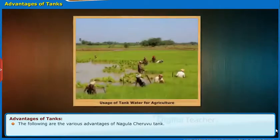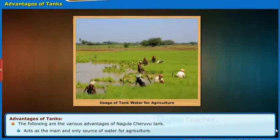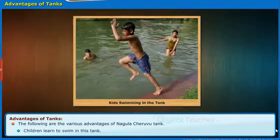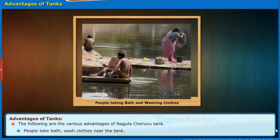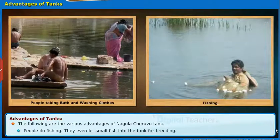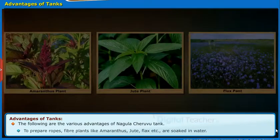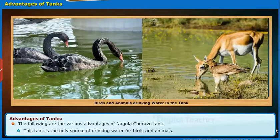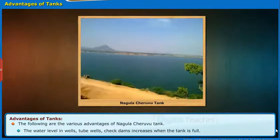Here we will know about the various advantages of Nagula Chiruvu tank. It acts as the main and only source of water for agriculture. Farmers and agricultural laborers mostly depend on this tank to carry out their agricultural activities. Children learn to swim in this tank. People take bath and wash clothes near the tank. People do fishing and even let small fish into the tank for breeding. Fiber plants like amaranthus, jute, flax, etc. are soaked in water. This tank is the only source of drinking water for birds and animals. The water level in wells, tube wells, and check dams increases when the tank is full.